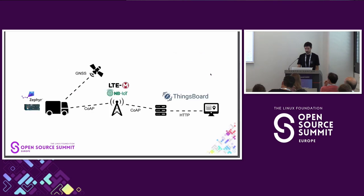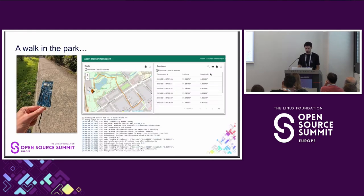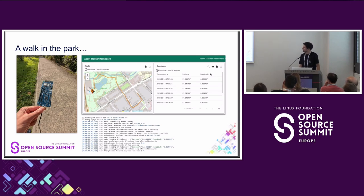So now I've covered all the technologies and components needed for the system, and I would say using Zephyr and ThingsBoard it's really quite a walk in the park to get a working prototype of an asset tracker. And actually, that's what I did last weekend — I took a walk in the park with my asset tracker, and here's the result. You can see the ThingsBoard dashboard visualizing the route I took. The device woke up every minute, got a GPS fix, sent it to the cloud, and all the data is there.